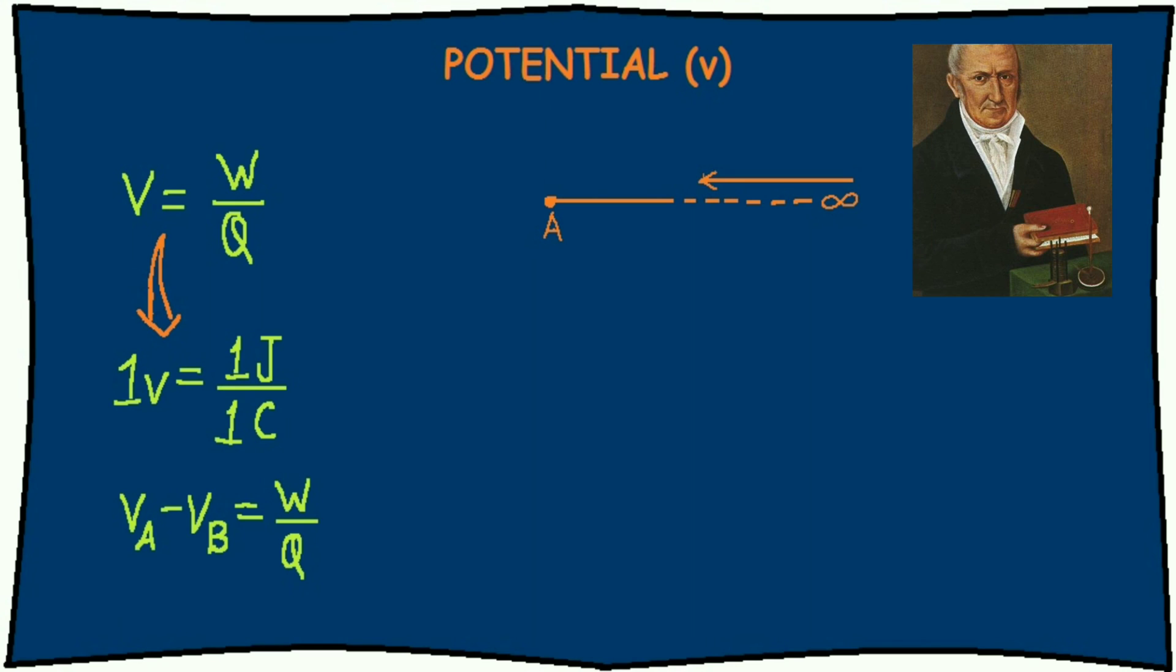The next thing to understand is potential. Potential is the work done in moving a charge from infinity to a point. Volt is the unit of potential in honor of Alessandro Volta. He was the first person to make a battery, if we don't consider Agastharishi.